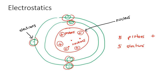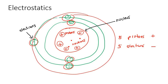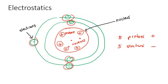So what would the overall charge be? The overall charge will be zero, because if you take five positives and add that to five negatives, that gives you zero. So the overall charge of this atom is going to be zero.